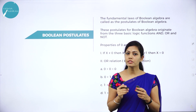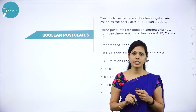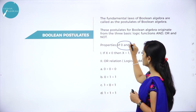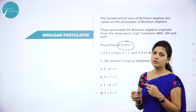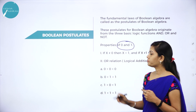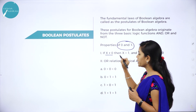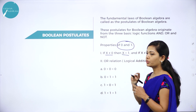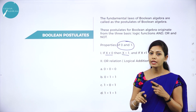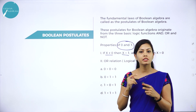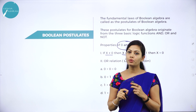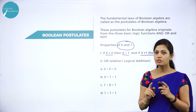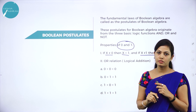Boolean postulates help to reduce a Boolean expression. So we have some important postulates in Boolean algebra. It is related to properties of 0 and 1. Which is the first property? If x is not equal to 0, then x is equal to 0. If x is not equal to 1, so x is equal to 0. This is your first Boolean postulate.